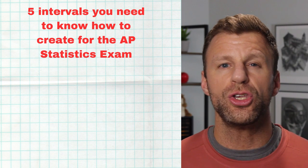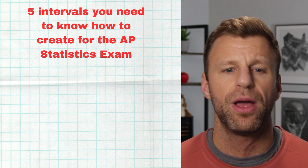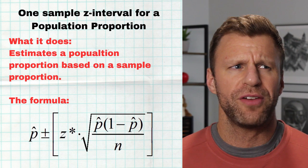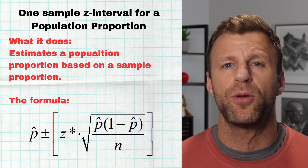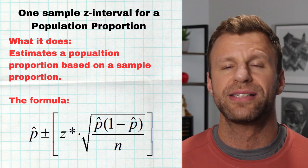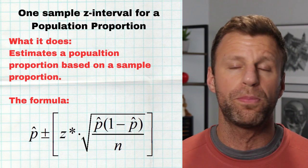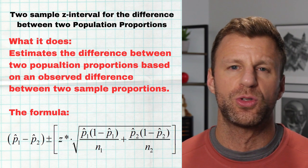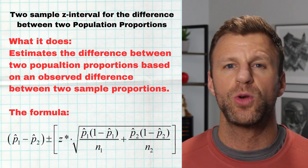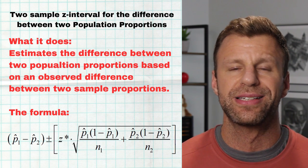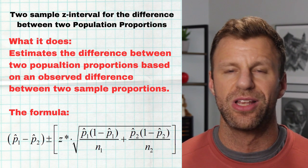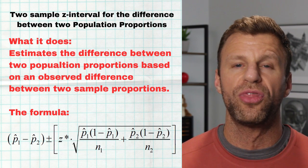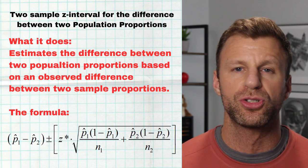There are five intervals you need to know how to calculate and interpret for the AP statistics exam. The first is a one-sample Z interval for a population proportion — for example, what proportion of men in Texas own a cowboy hat? I can get a sample proportion and use it to build a confidence interval for the true proportion. We could also do a two-sample Z interval for the difference between population proportions — for example, the difference between the proportion of men and women in Texas who wear a cowboy hat — by getting a sample from each and adding or subtracting a margin of error.